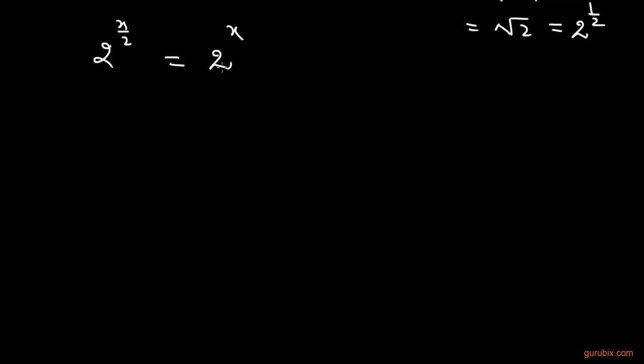Since both the base values are equal, these exponents will also be equal. This means x/2 = x, which means 2x = x, which means 2x - x = 0, which means x = 0.